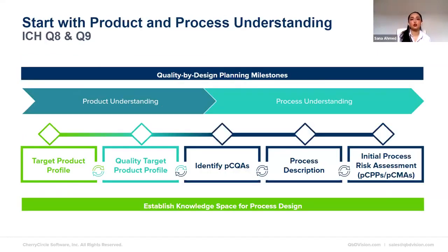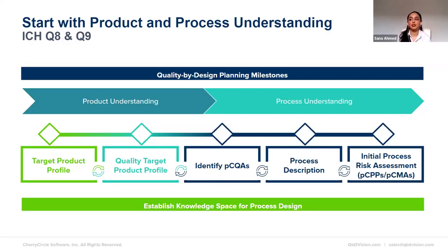The first question is how do you start off with gaining your product and process understanding — essentially the first few stages of the QBD workflow? The answer is by beginning with the end in mind. The key during these stages is intended performance. ICH QA says the development section should describe the knowledge that establishes that the type of dosage form selected and the formulation proposed are suitable for the intended use. To know that information, we have to start with the patient in mind, done with the creation or revisit to a target product profile, or otherwise known as the product monograph. ICH QA further highlights the need for a manufacturing process to consistently deliver the intended performance of the product, so once patient targets have been identified, quality targets to meet these must also be identified.